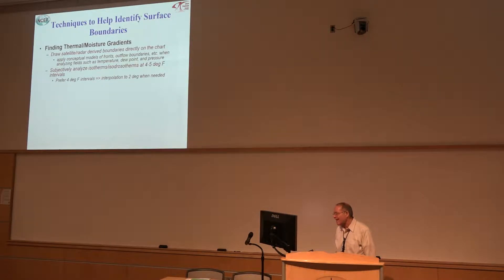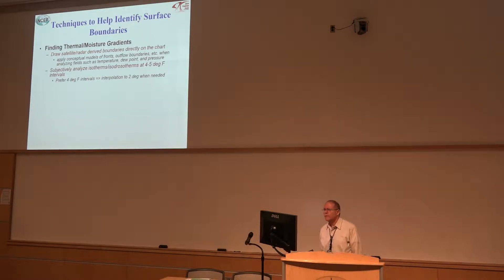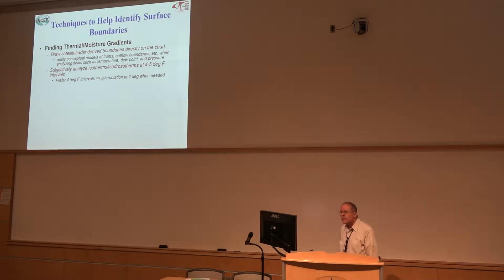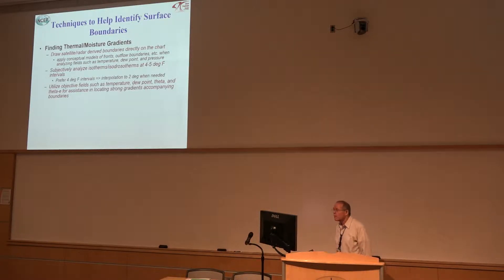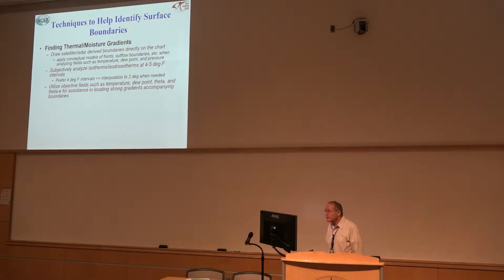If I draw five-degree intervals, I'm really bad at thinking in terms of two-and-a-half-degree intervals, so it works better for me to use four. I'm going to use objective fields to help me — theta and theta-e to locate gradients, temperature, dew point.